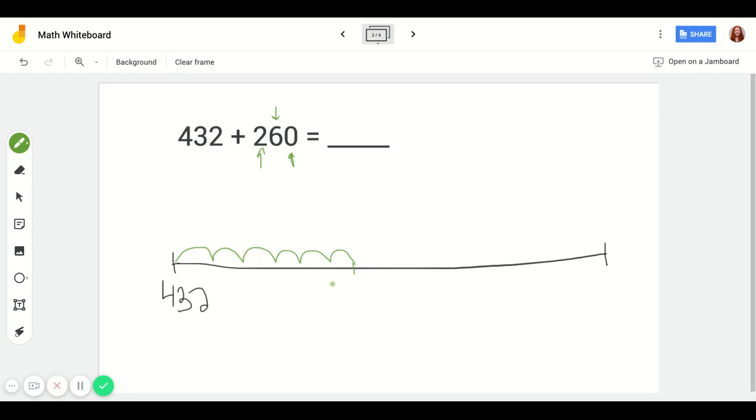Well now we're part of the way there with 492. That takes care of the 60 in our tens place. Now I need to still add 200 more.